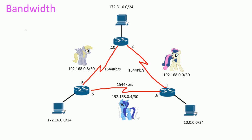The clock rate actually sets the bandwidth of the interface — the actual speed of it. But the bandwidth command is just a label, like a name that says 'hey, this interface runs at this speed,' and it's used in routing protocols.